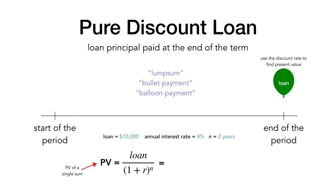With the formula, we calculate the following. The present value is equal to $10,000 divided by 1 plus our interest rate to the power of 2. Thus, our loan has a present value of $9,246.